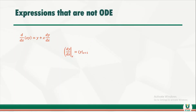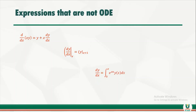Example two: we cannot call this expression an ODE despite the fact that the dependent variable is changing with respect to one independent variable. This is because we are evaluating the left-hand side expression at x, while we are evaluating the right-hand side expression at x plus one. Since the two sides are evaluated at different points, this is not an ordinary differential equation.